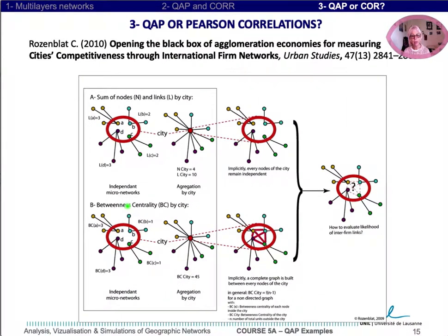The question appears when one aggregates micro-networks like multinational firms by city. For the A case, when one makes the sum of linkages by city — the degree — one supposes implicitly that there are no relations at all between the different firms located inside the city.